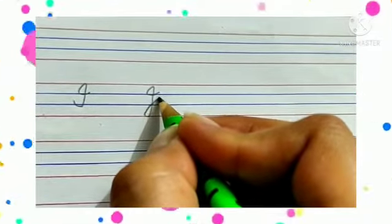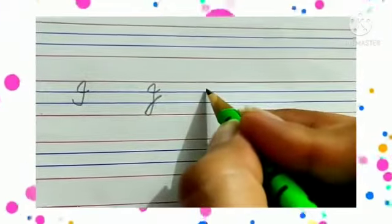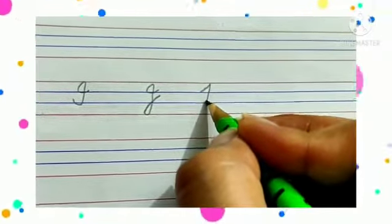Take a sleeping line, go up, touch the upper red line, come down, touch the bottom red line, make a curve, and then make a tail. J says /j/.